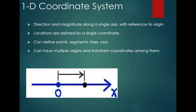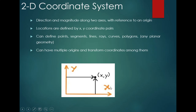There is a 1D Coordinate System, a 2D Coordinate System, and also a 3D Coordinate System. We transform the coordinates according to those coordinates. In 1D, there is a single dimension — the X-axis — with an origin. In the 2D coordinate system, you can define x-y coordinate pairs. We use lines, points, segments, rays, curves, and polygons. It can have multiple origins and transform coordinates among them. In the x-y plane, we can define some points, segments, or lines.